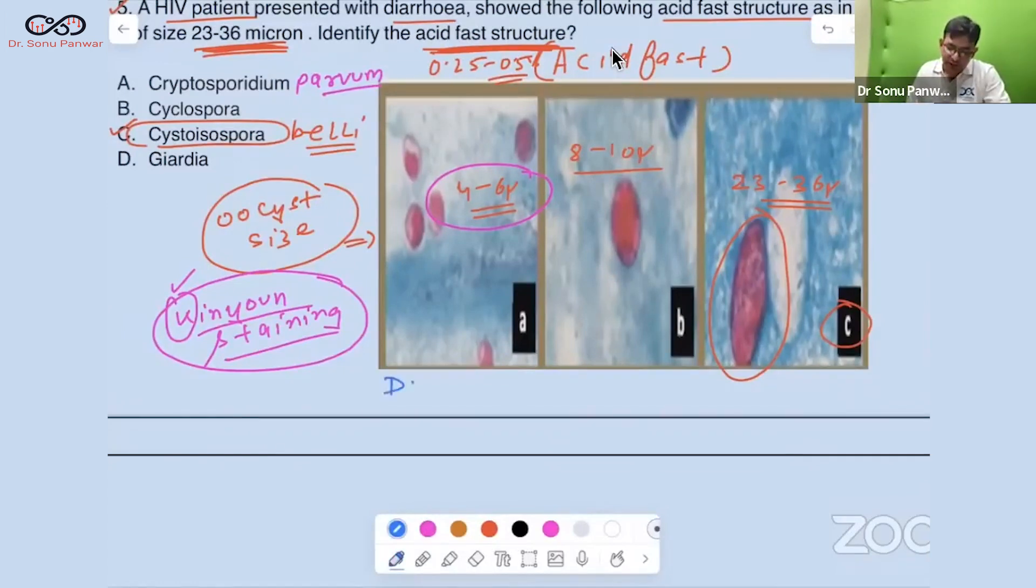The drug of choice for Cryptosporidium is Nitazoxanide. And this Nitazoxanide, how do you remember this? The Nitaambani have invested in crypto. So Nitazoxanide is for Cryptosporidium parvum.